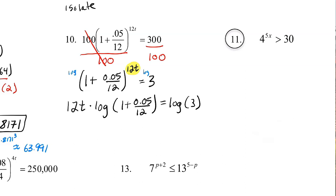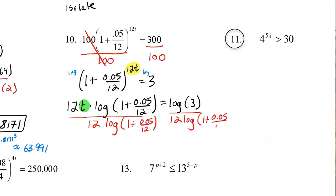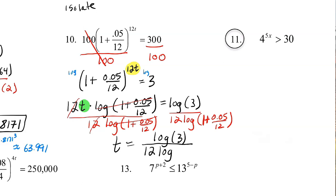Now we'd like to solve for T. So we're going to divide both sides by 12 to get rid of the 12, and we're going to divide both sides by log(1 + 0.05/12). So we're left with T equals log 3 divided by 12 times log(1 + 0.05/12). It's a common log.